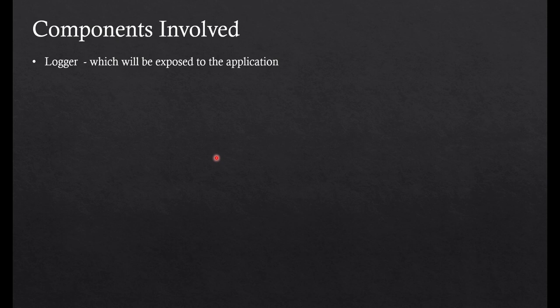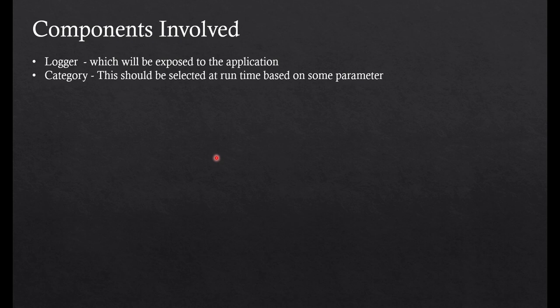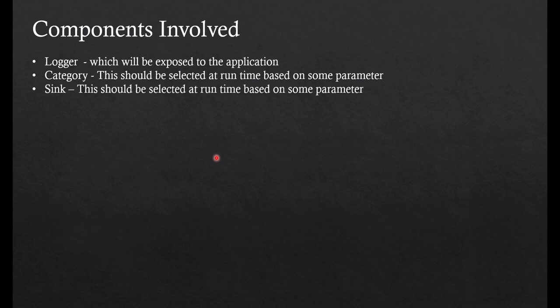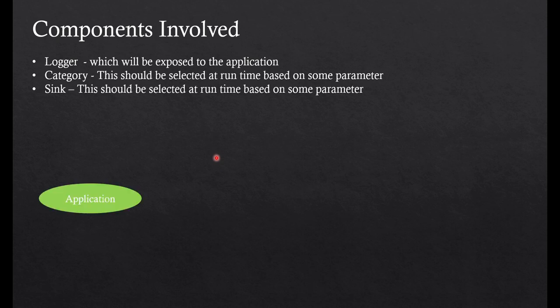First, we will have a Logger class which will be exposed to the application — you will use this class to write your log. We will have categories so that based on your category you should either log or skip the log. If your logging category is debug, you don't want to show anything above debug. If you've defined category as info, you don't want to show debug or error logs — just info. Finally, there is the sink, and there can be multiple sinks selected based on some parameter or config file.